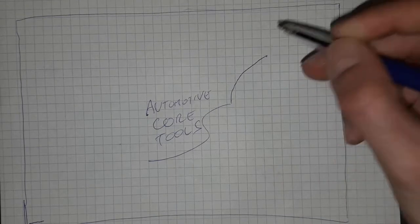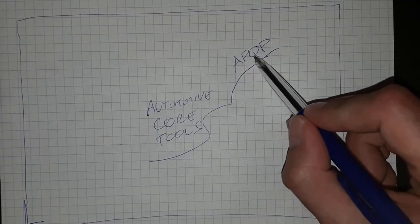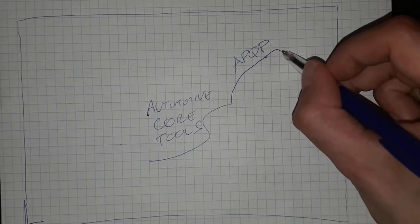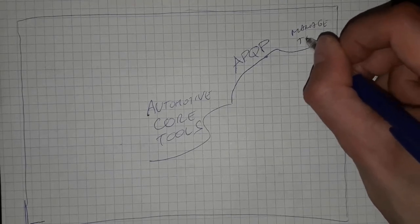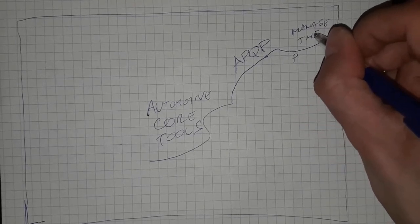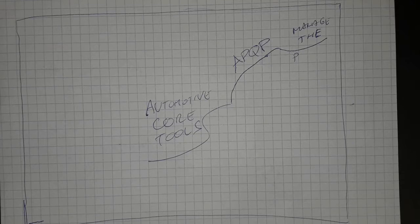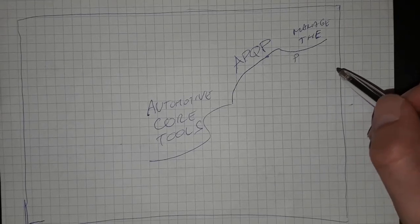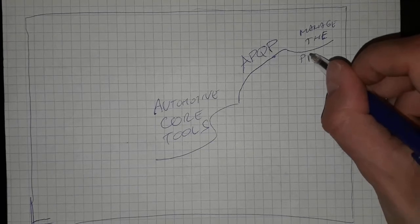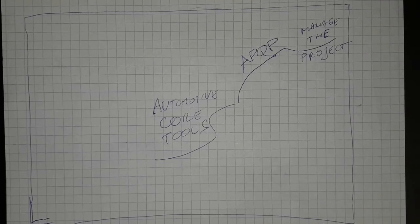The first tool is the project management tool: APQP, which means Advanced Product Quality Planning. It is used to manage the project so that we can really grasp the whole process — production of a component, design of a component, testing of a component, supply of the component, making changes, installing it into the car, and redesigning it if needed.